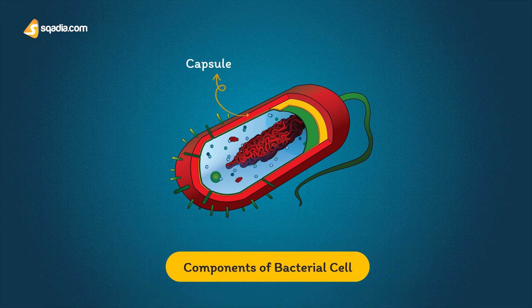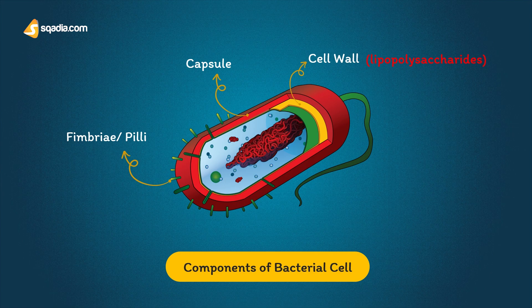The six components are: number one, capsule; number two, lipopolysaccharides; number three, fimbriae or pili; number four, flagella; number five, slime; and number six, spores.